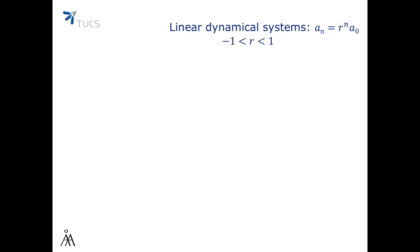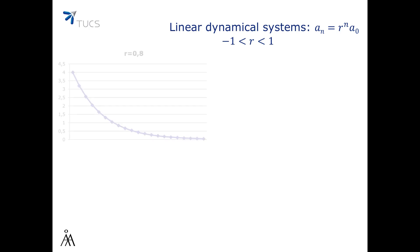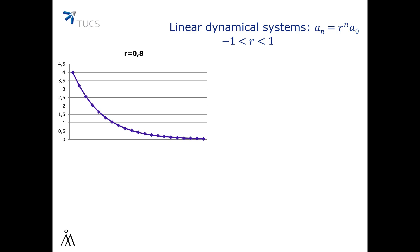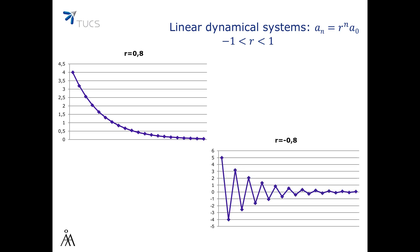In the case when r is between -1 and 1, rⁿ will tend to 0 and so the whole sequence will tend to 0. If r is positive between 0 and 1, then the sequence decreases uniformly from its first value to 0. If r is negative between -1 and 0, then the sequence will switch between positive and negative values all closer and closer to 0.